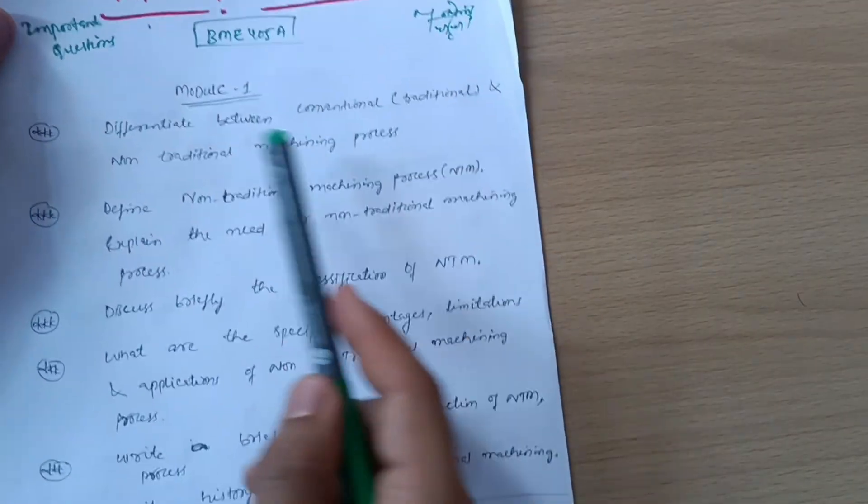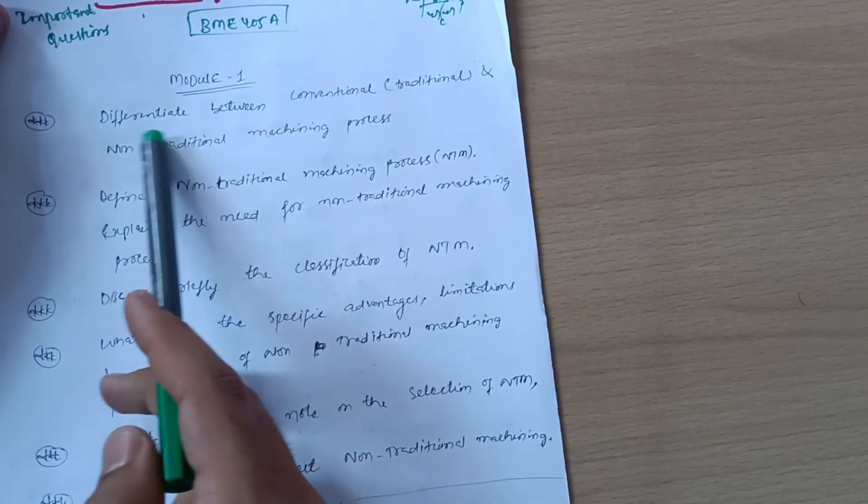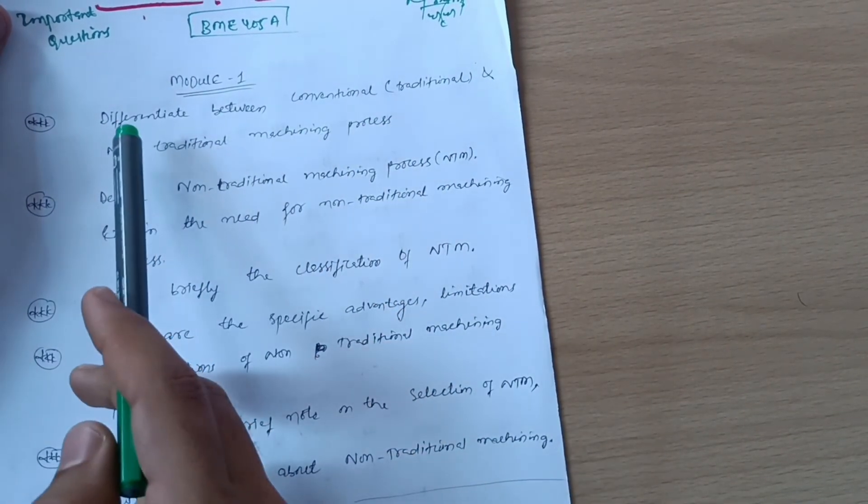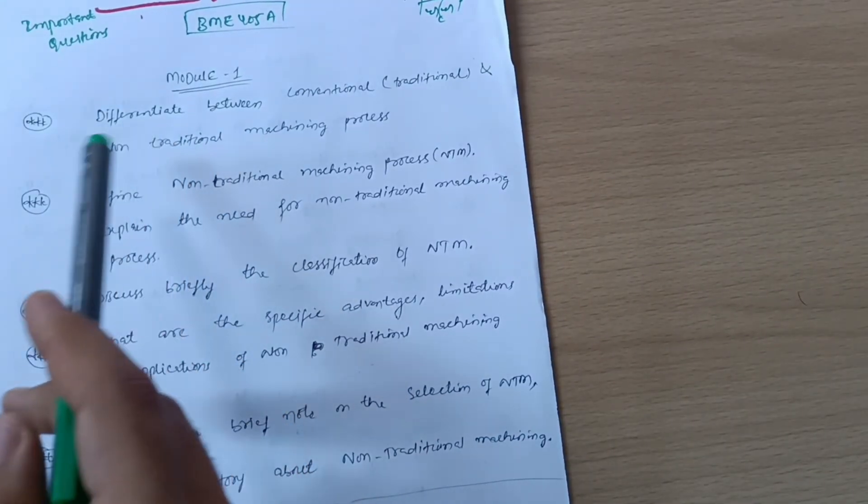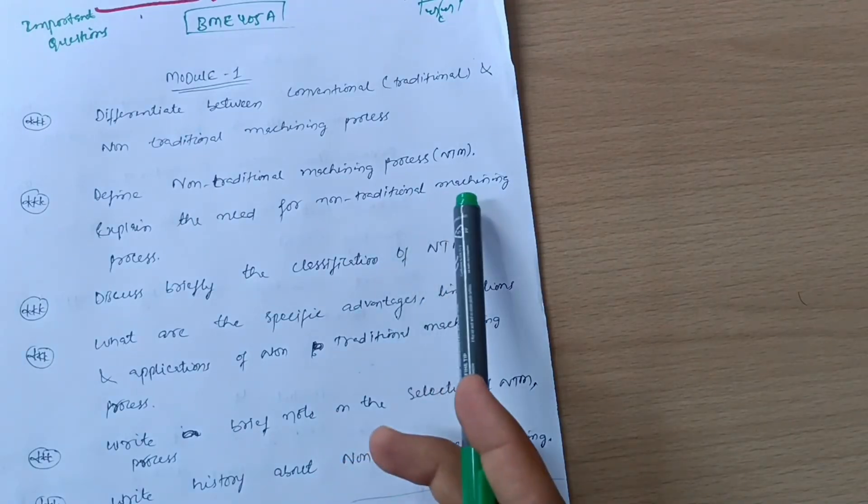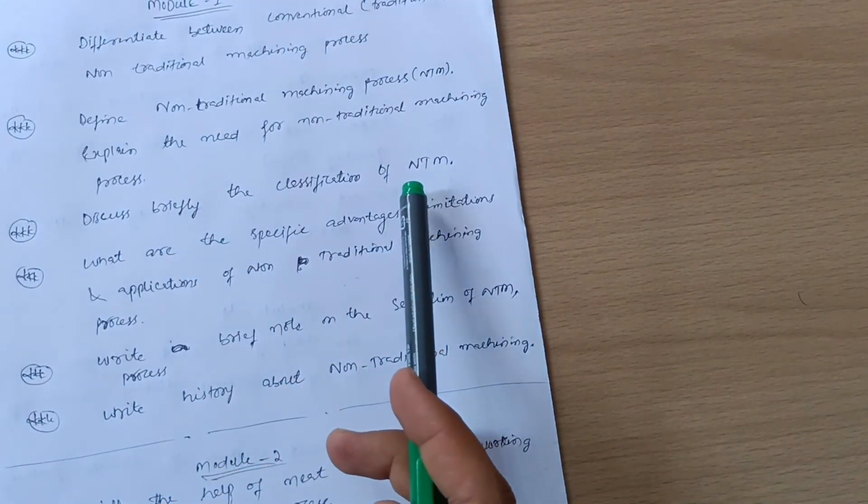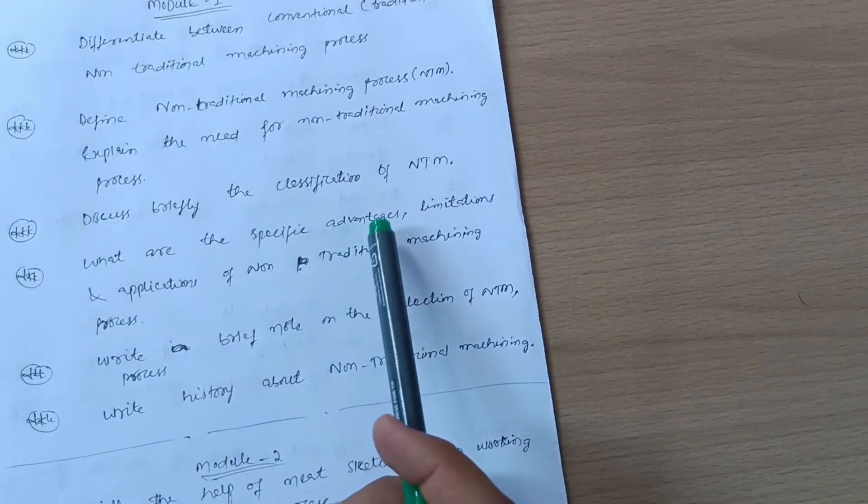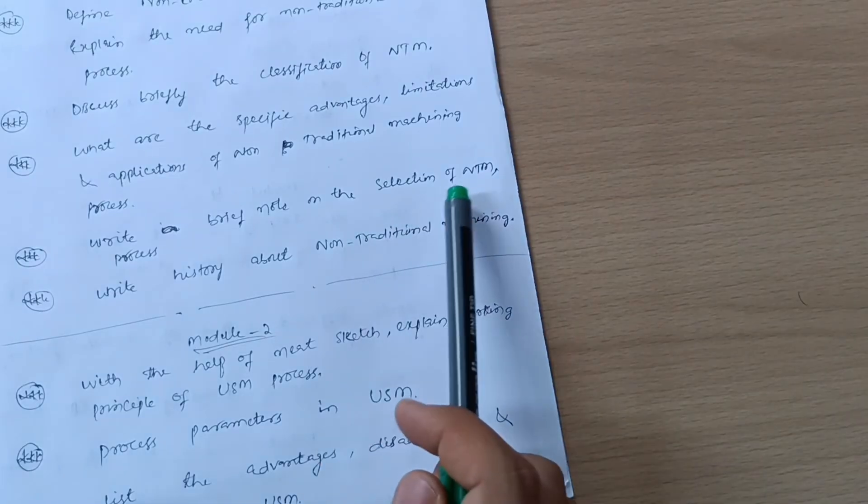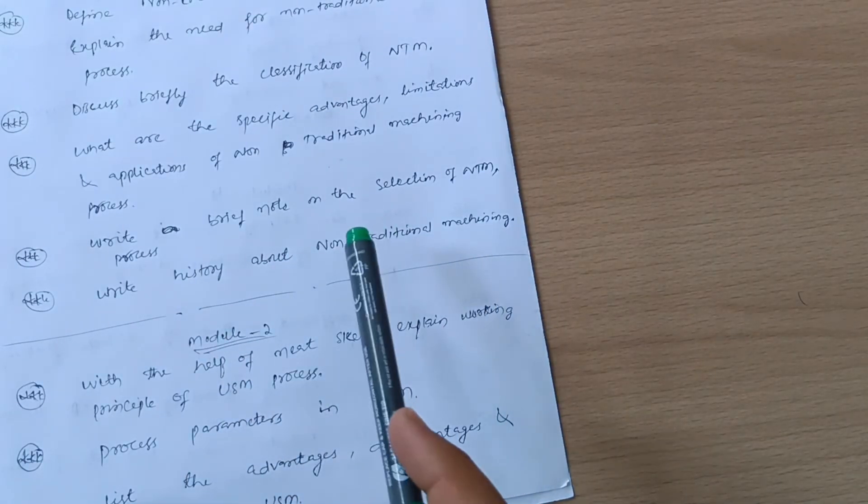Let us discuss module-wise. Here are important questions - six questions you have to cover from module first. That is enough to cover 20 marks: differentiate between conventional or traditional and non-traditional machining process, define non-traditional machining process NTM, expand the need for NTM process, discuss briefly the classification of NTM, what are the specific advantages limitations and applications of non-traditional machining process, write brief note on the selection of NTM process, write history about non-traditional machining.